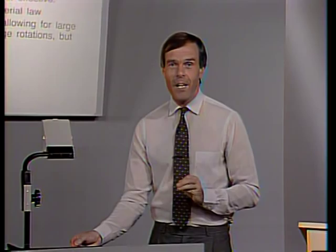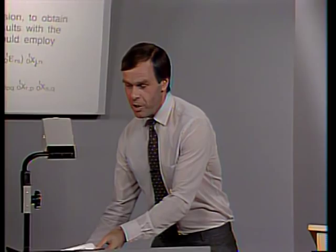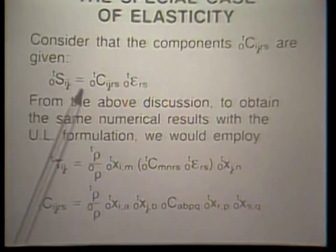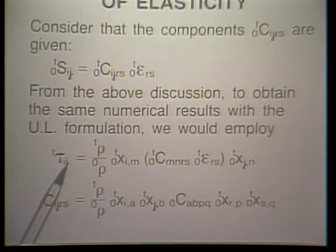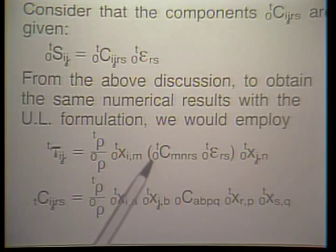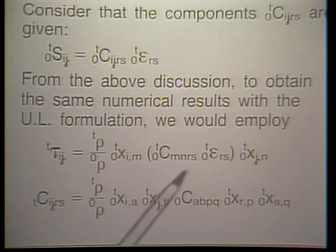Let us now look at the special case of elasticity. One way to proceed is to use the relationship where we have the second Piola-Kirchhoff stress on the left-hand side and the Green-Lagrange strain on the right-hand side multiplying the constitutive relation for the TL formulation. If we use this equation in the relation giving Cauchy stress in terms of second Piola-Kirchhoff stress, we obtain the corresponding expression, and we must also apply the constitutive transformation for the updated Lagrangian formulation as just discussed.